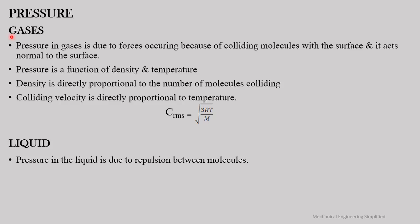Pressure is a very important property. In gases, pressure is caused by forces arising from colliding molecules with the surface, and it acts normal to the surface. Pressure is a function of density and temperature: density is directly proportional to the number of colliding molecules, and colliding velocity is directly proportional to temperature. According to kinetic theory of gases, the RMS velocity is given by √(3RT/M), where R is the characteristic gas constant, T is temperature, and M is mass. In liquids, pressure arises due to repulsion between molecules.